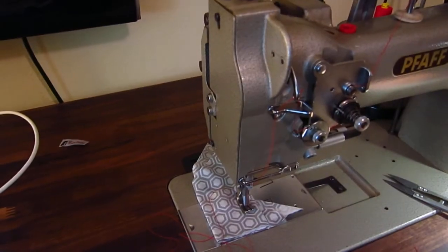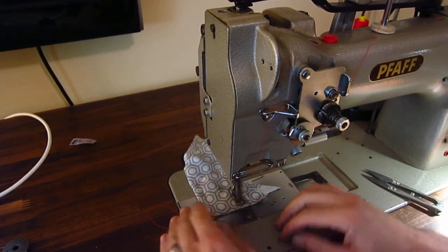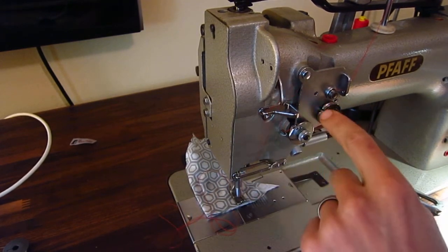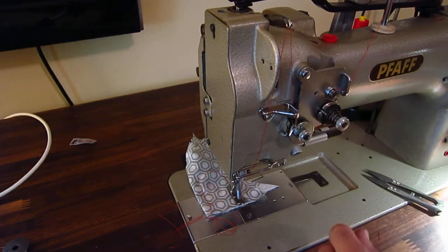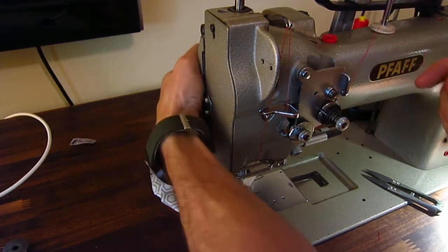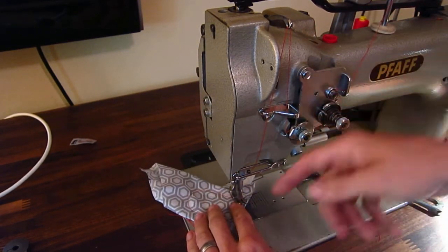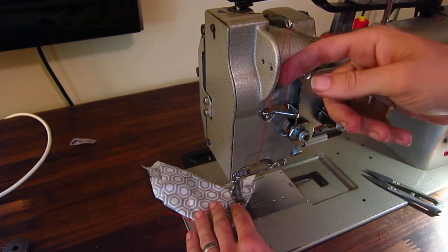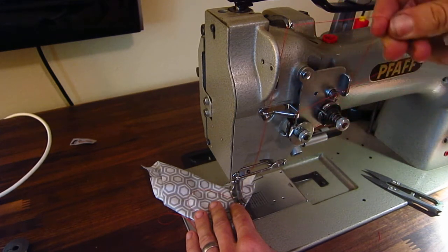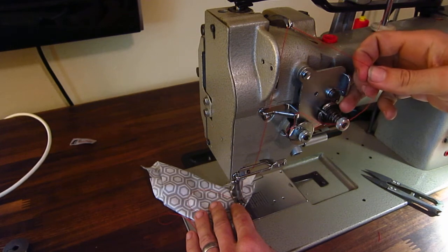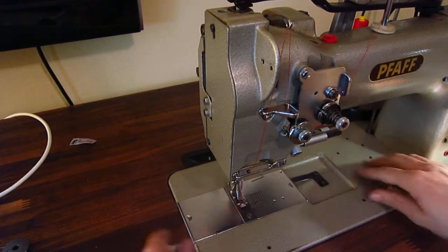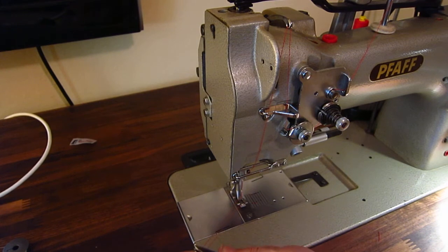Now, when you get to the end of your stitching, go ahead and raise, turn the hand wheel so that the take up lever is at the highest position. And take your piece out. And you're going to get some length on the thread. To get some extra thread here. Because everything is under high tension. Grab the thread to the right side of the take up lever. And just pull it through.